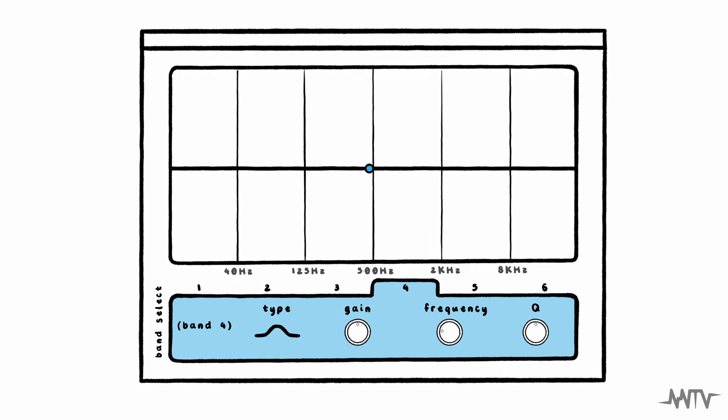Next, we'll choose how much we would like the surrounding frequencies to be affected by our change. This is called the bandwidth and is usually represented with the letter Q. Though there are many different ways to use this control, a common practice among audio engineers is to boost frequency bands using a wide bandwidth or low Q value, or cut frequency bands using a narrow bandwidth or high Q value.